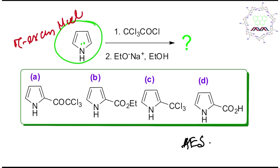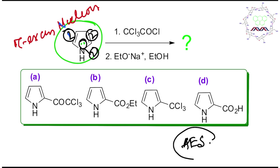The six aromatic electrons responsible for aromaticity are distributed over five atoms — four carbon and one nitrogen. The six electrons come two from here, two from here, and two from the lone pair of electrons from nitrogen. So you can understand this is actually a pi-excess nucleus, activated for aromatic electrophilic substitution.